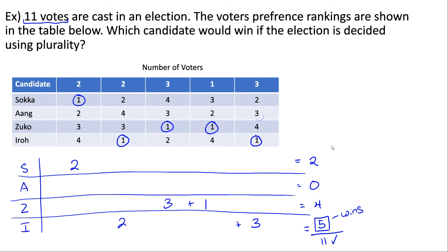To illustrate this, consider three voters in the table. If Iro was not a candidate, they prefer Sokka over Aang, so they would vote for Sokka. For one voter, if Aang and Zuko were eliminated and they had to choose between Sokka and Iro, they prefer Sokka because Sokka is ranked third versus Iro's fourth. If the candidate they rank first is eliminated, they vote for whoever is next most preferred.